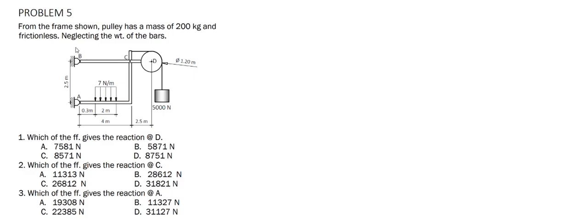For this problem, we are given a frame that has a pulley with a mass of 200 kg, and it is frictionless. Neglecting the weight of the bars, we are tasked to find the reaction at D, C, and A. To do this, we break down this frame into its individual members and draw its free body diagram to see what we can get.